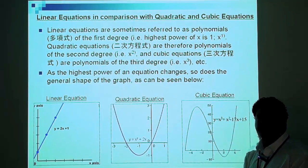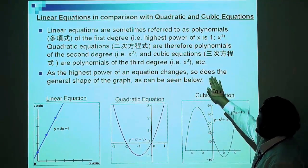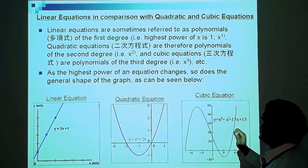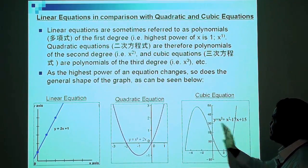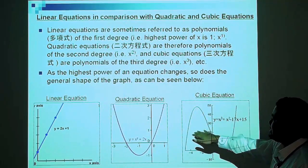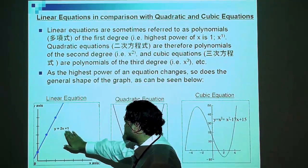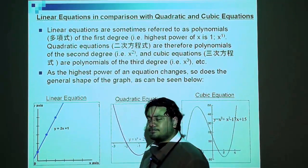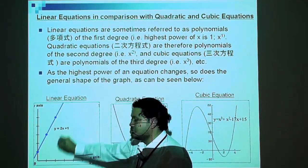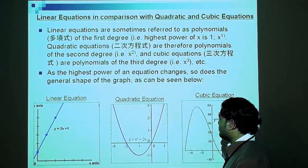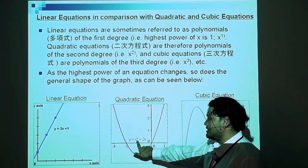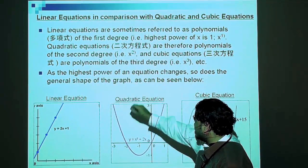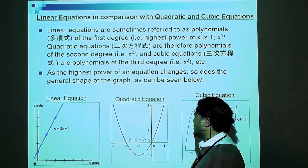You can even have x to the power of 4, quartic equations, and x to the power of 5, x to the power of 6. As the highest power of an equation changes, so does the general shape of the graph, as can be seen below. Here we have a linear equation. How do you know it's a linear equation? The highest power of x is 1. A linear equation gives a straight line. Quadratic equations - notice the highest power of x is 2. The general shape of a quadratic equation is a curve like this, called a parabola.